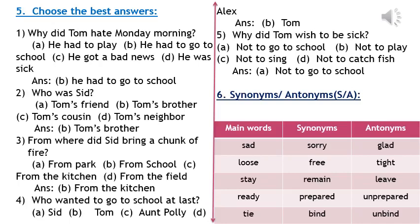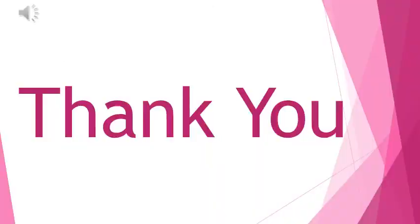Now synonyms and antonyms. Main word: sad — synonym: sorry, antonym: glad. Main word: lose — synonym: free, antonym: tight. Main word: stay — synonym: remain, antonym: live. Main word: ready — synonym: prepared, antonym: unprepared. Main word: tight — synonym: bind, antonym: unbind. My dear students, that's all for today.